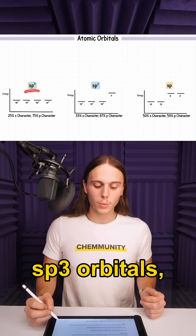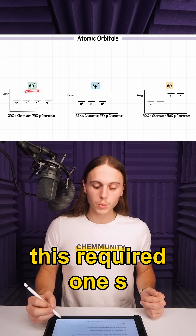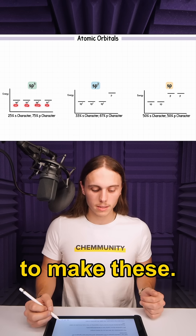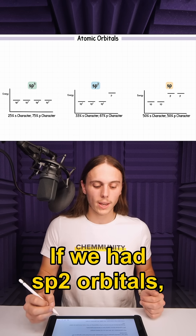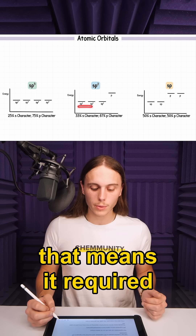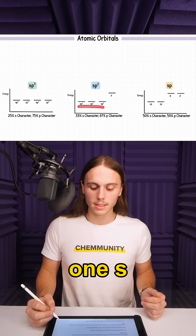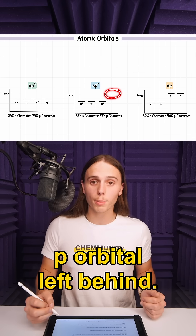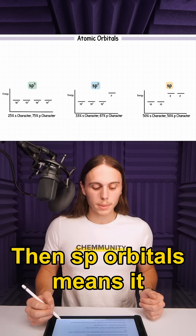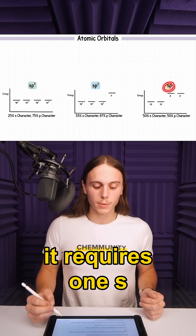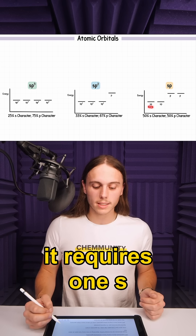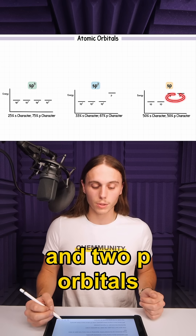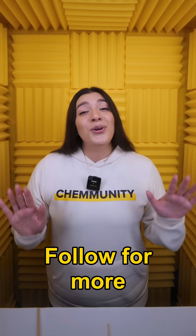Note that when we say sp3 orbitals, this required 1s and 3p orbitals to make these. If we had sp2 orbitals, that means it required 1s and 2p orbitals, which means we still have a p orbital left behind. Then sp orbitals means it requires 1s and 1p orbital to form, and 2p orbitals are left behind. Follow for more quick refreshers.